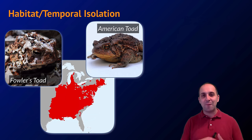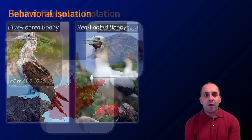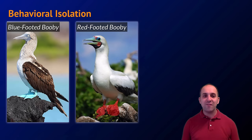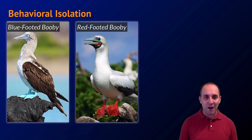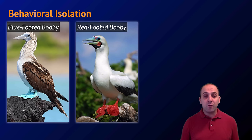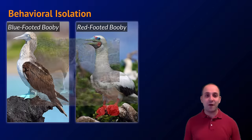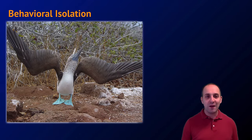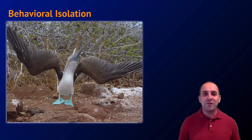Our next prezygotic barrier is behavioral isolation, where different species act in different ways so that they don't reproduce with each other. I've spotlighted here the blue-footed boobies and red-footed boobies of the Galapagos Islands, who have elaborate mating dances — here is the blue-footed booby engaged in its sky-pointing dance. As a result, these species do not reproduce with each other because they are behaviorally very different.